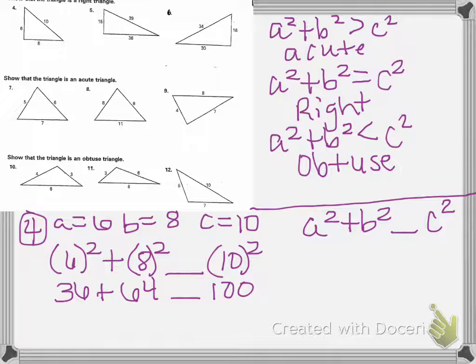So we know that 36 plus 64 is 100, so our sign is equals 100. That means number 4 is a right triangle.